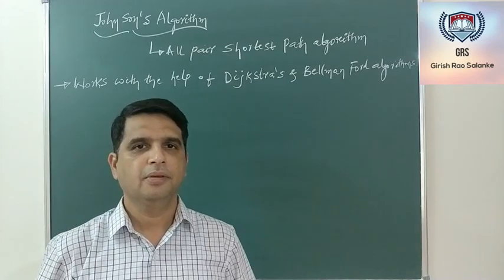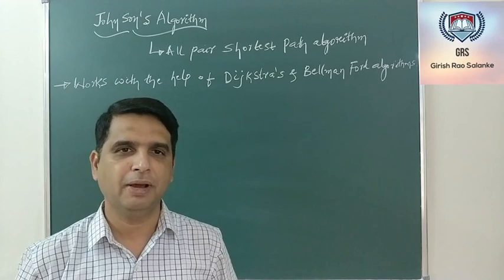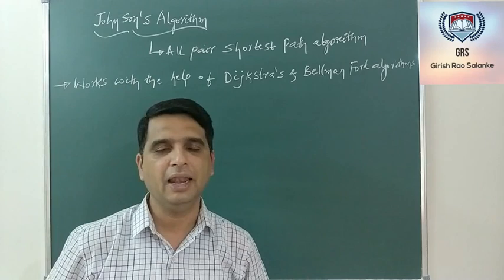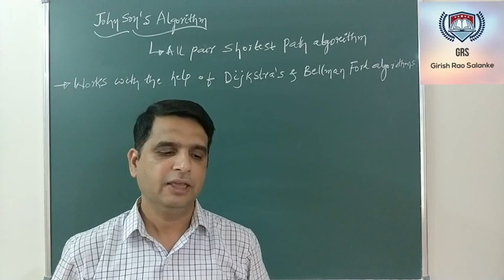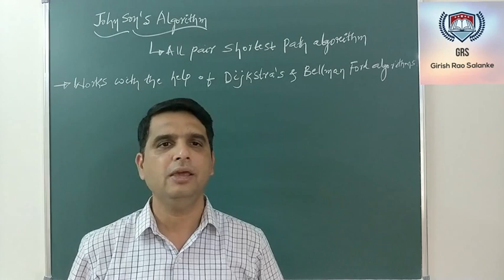Hello everyone. In today's video we are going to discuss one more shortest path algorithm by name Johnson's algorithm. Please note that Johnson's algorithm is an all-pairs shortest path algorithm. For a given graph with n number of vertices, this algorithm finds the shortest path among all the vertices.